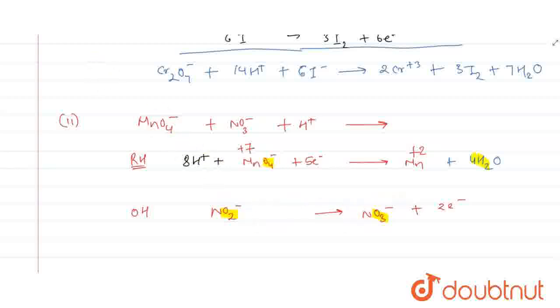And for balancing the hydrogen, 2 hydrogens we have here, so we will add 2H+ on the product side. And number of electrons in the first reaction are 5, and here number of electrons are 2.